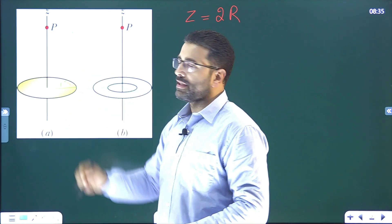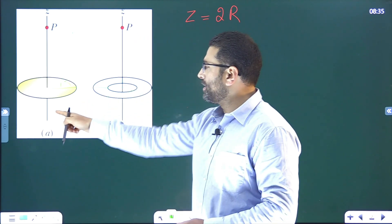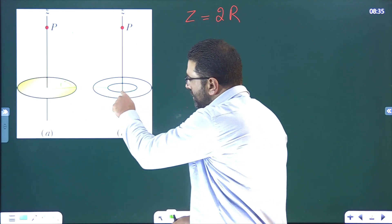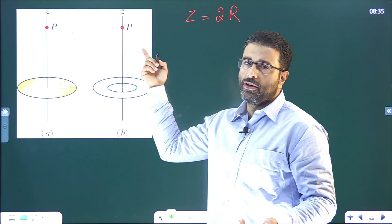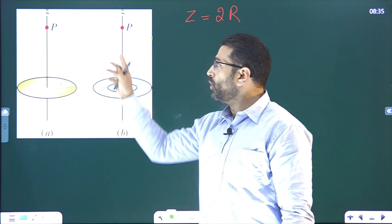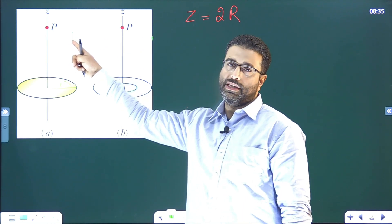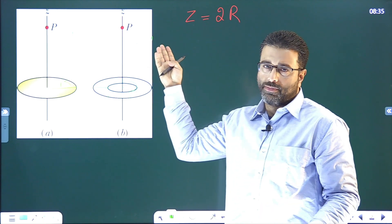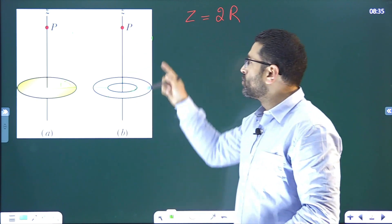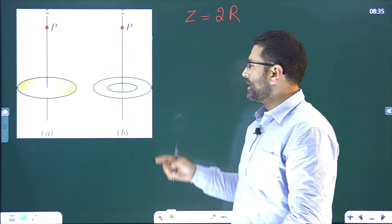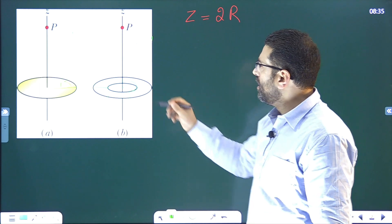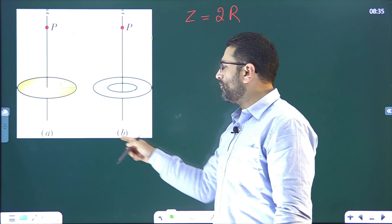Let's call the field of the full disk E_a. Now, if you remove the inner part, sigma is the same, charge density is the same. By superposition, the field at point P for the ring is E_b, which equals E_a minus E_inner, where E_inner is the field due to the inner part that was removed.